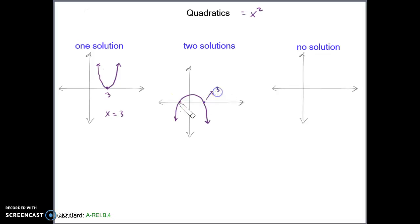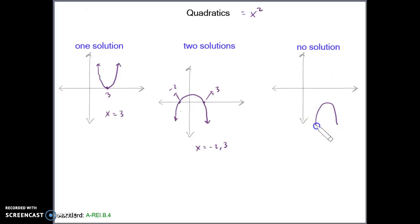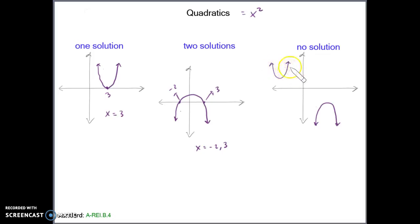So let's say this is intersecting at 3 and at negative 2. Your solution here would be x equals negative 2, x equals 3. And then no solution would be where the quadratic never intersects the horizontal axis — because the arrows are pointing down and it's already below it, or if the arrows were pointed up and it was already above it. So this is what a no solution would look like, and that would just be x equals no solution.